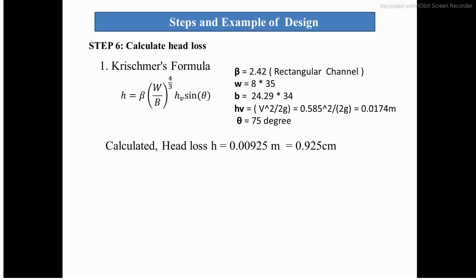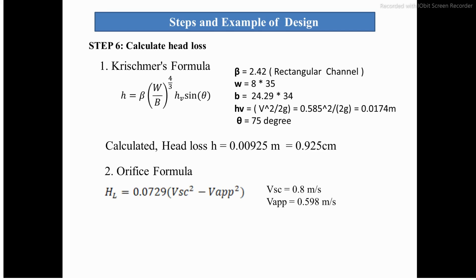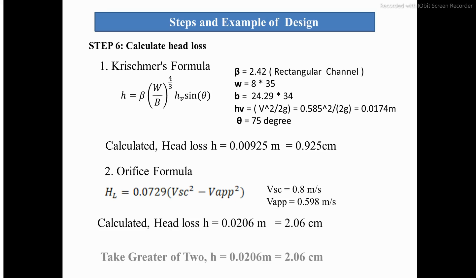In step 6, we calculate head loss first using the Kirschmer formula, with β = 2.42, velocity head = V²/2g, and θ = 35°. The calculated head loss came out to be 0.925 cm. Using the orifice formula, with screen velocity 0.8 m/s and approach velocity 0.598 m/s, the calculated head loss is 2.06 cm.